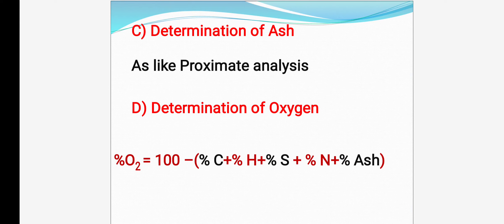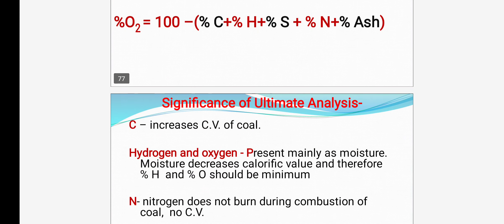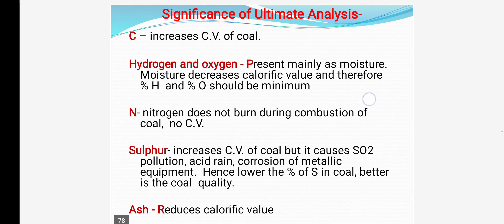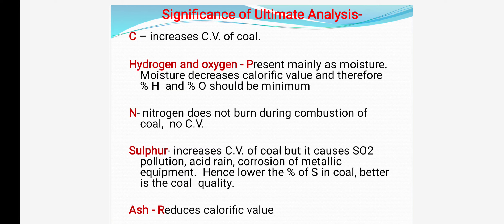This is the complete ultimate analysis. Now we will see the significance of ultimate analysis. Carbon is the actual burning part of coal or any fuel. So, higher percentage of carbon, higher will be the calorific value.